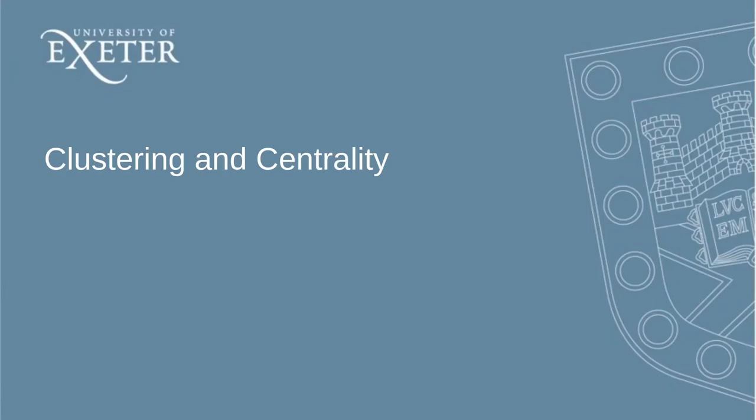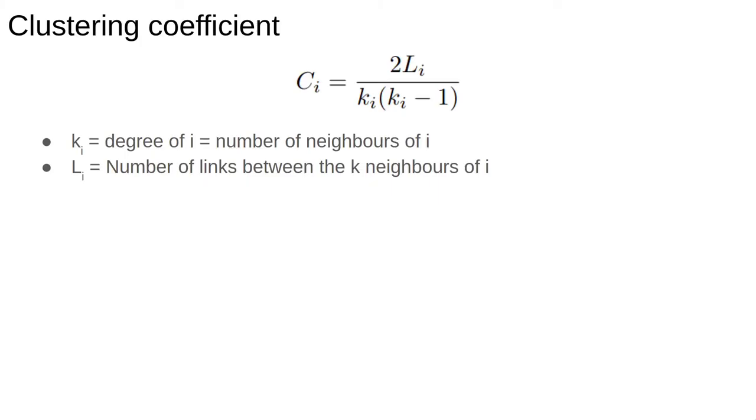In this video we'll talk about different properties of nodes we can measure to tell us about what's important in a network. The first node property we'll discuss is the local clustering coefficient.